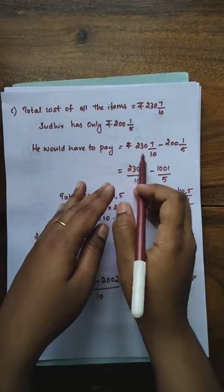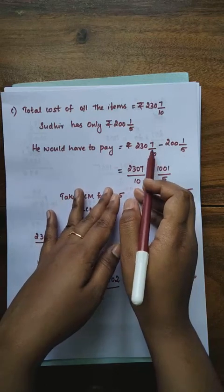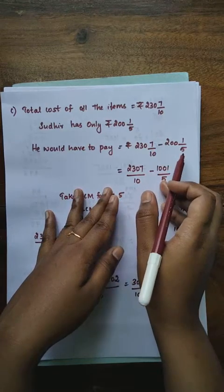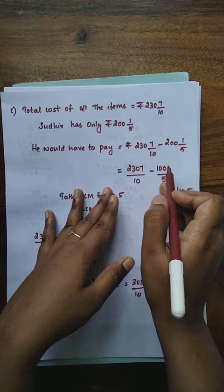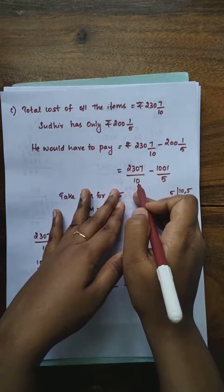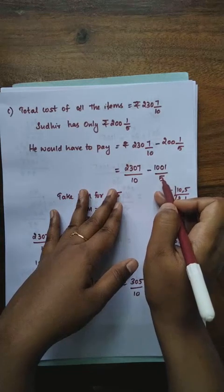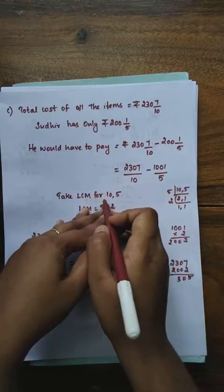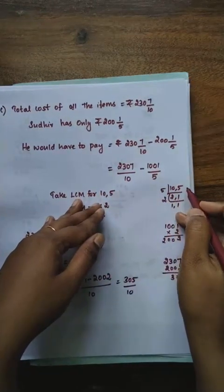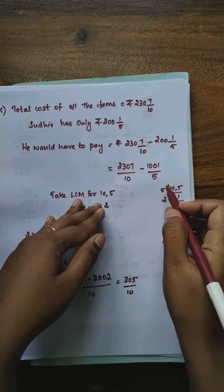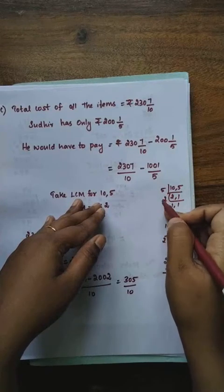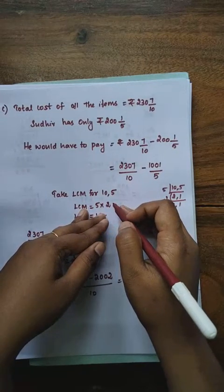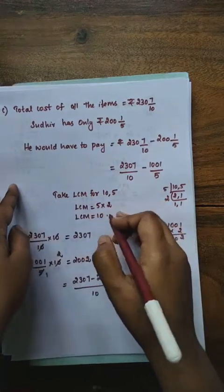Check the denominators: 10 and 5 are different. Take LCM for 10 and 5. Using 5 table: 2×5 is 10, 1×5 is 5. Our LCM is 5 × 2 = 10. So our LCM is 10. We are going to change the denominator to 10.